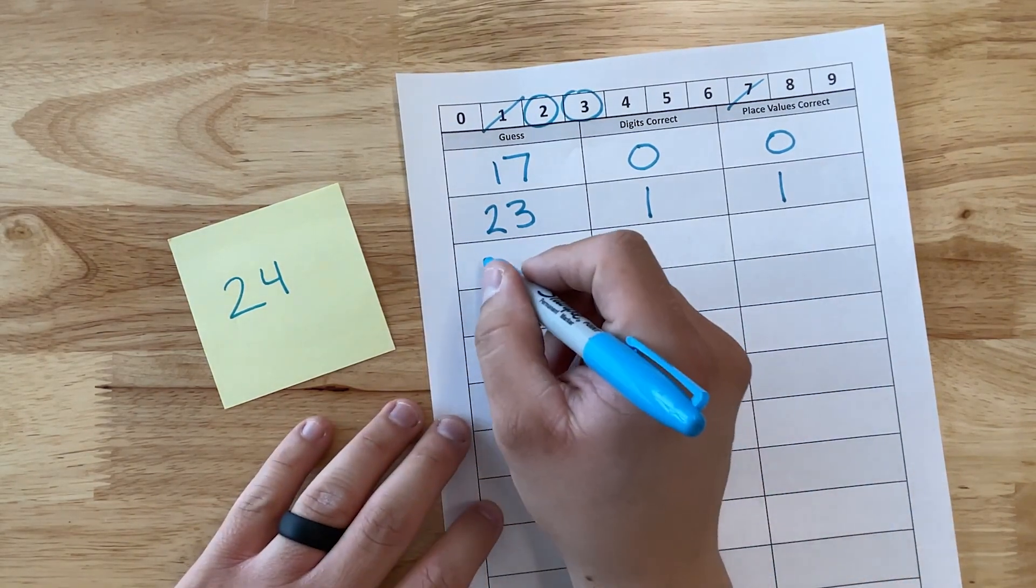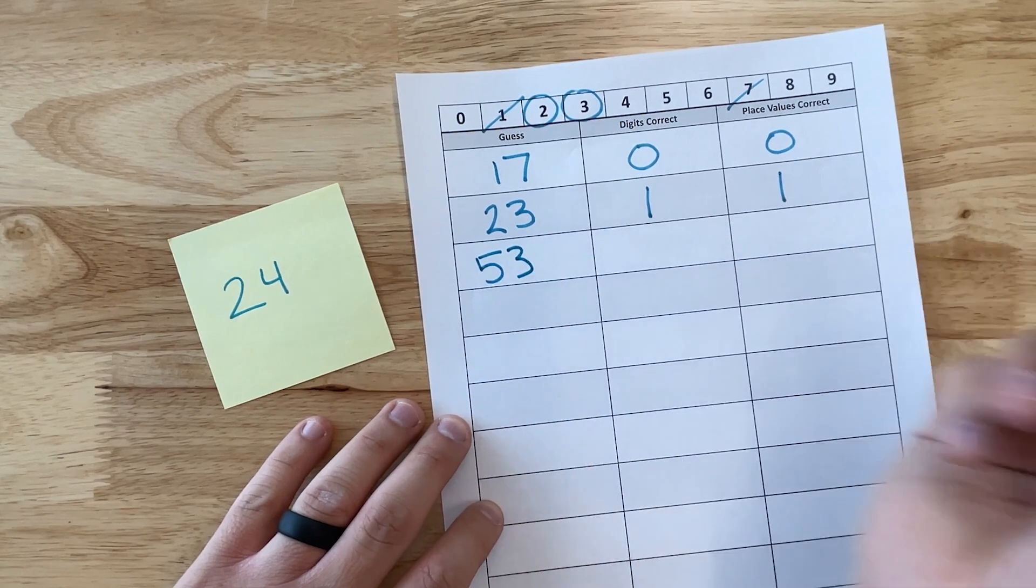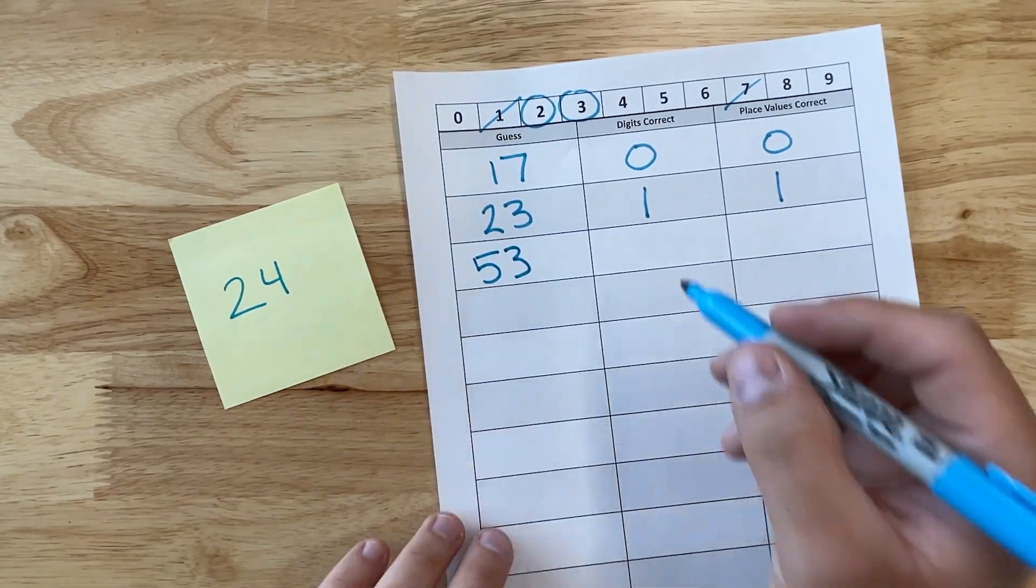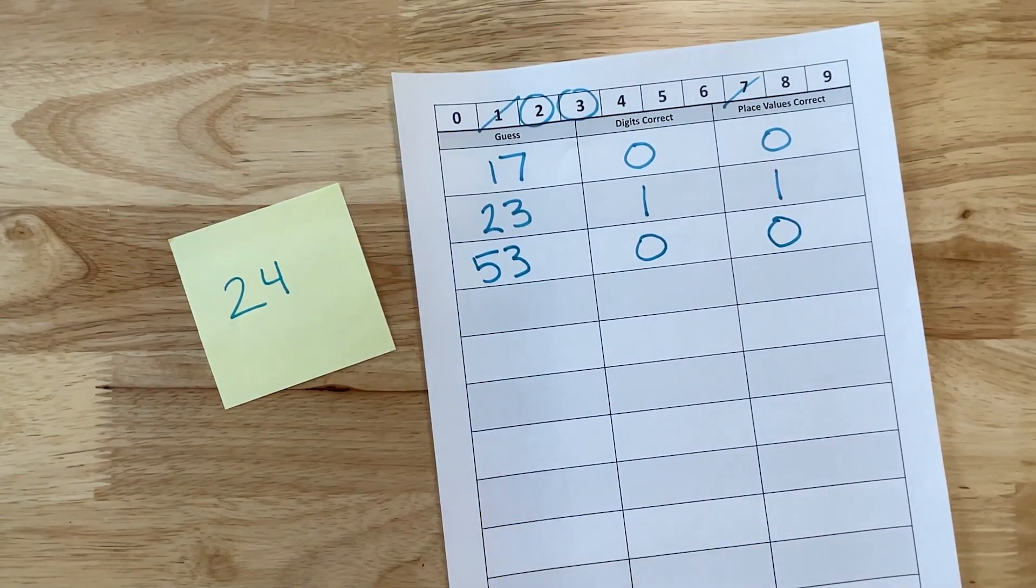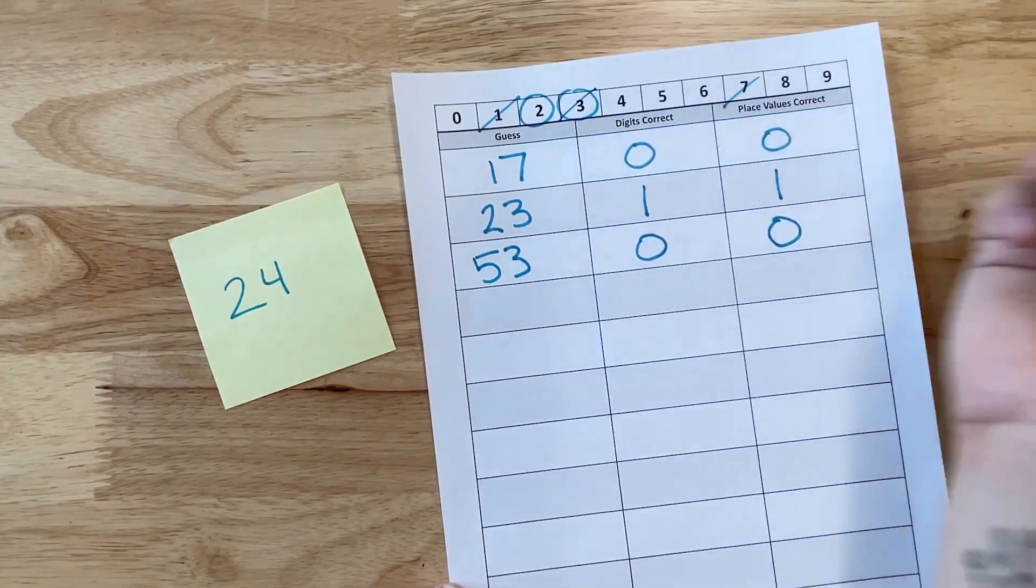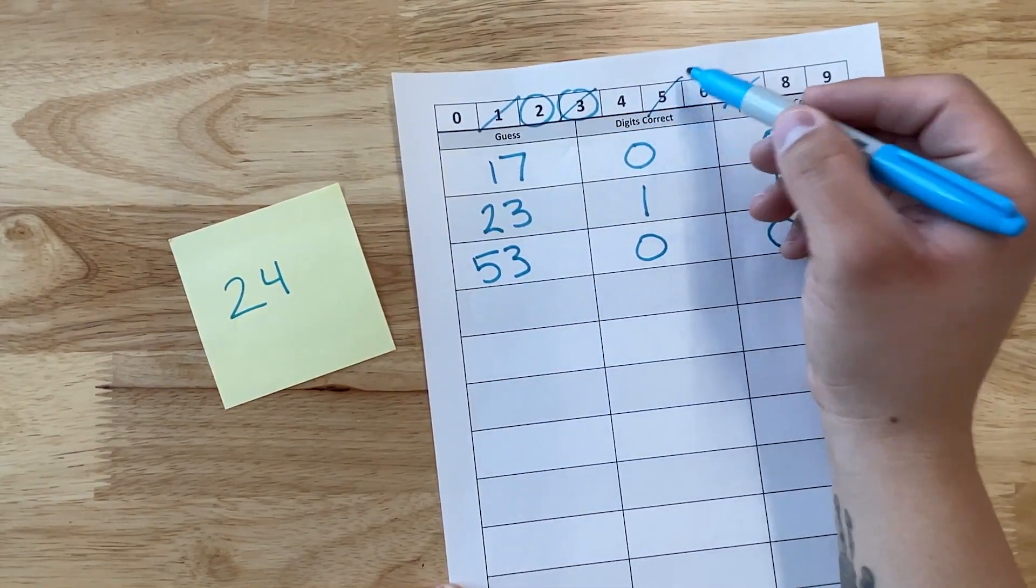Let's say the next guess is 53. I'm going to tell students that zero digits are correct and zero are in the correct place value. As you're teaching the strategy, you're going to say the only number that continued was three. So cross out the three and also cross out the five.